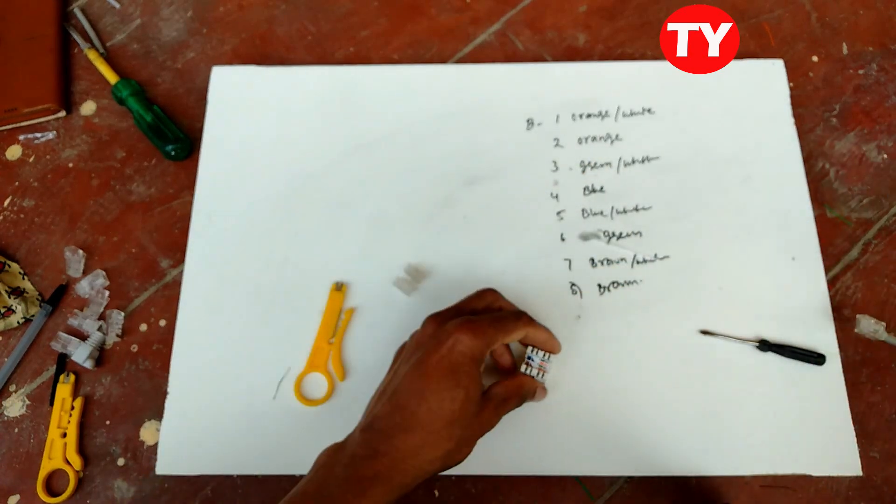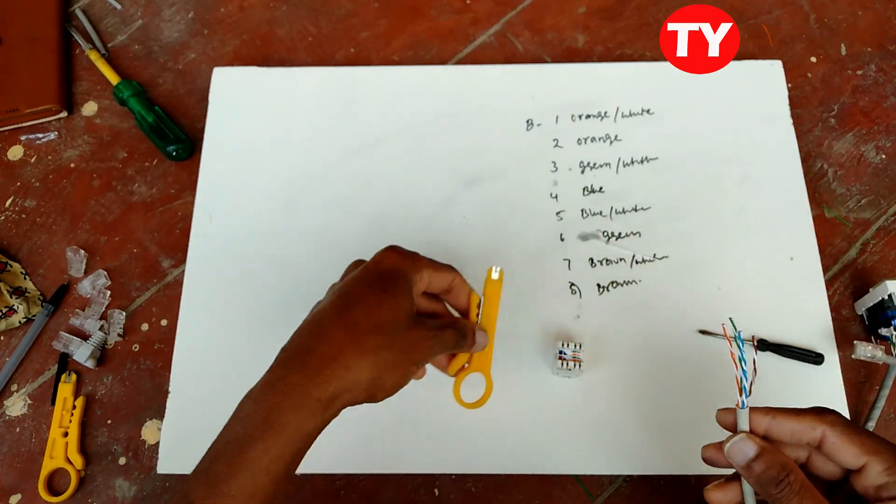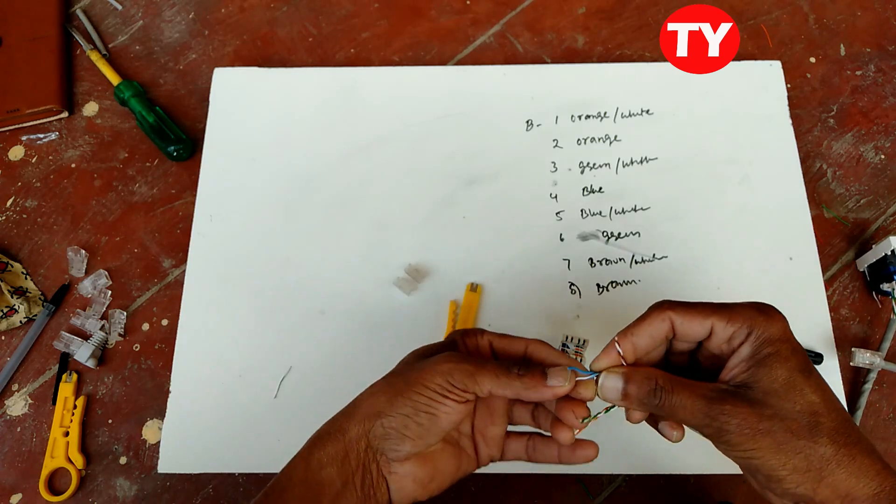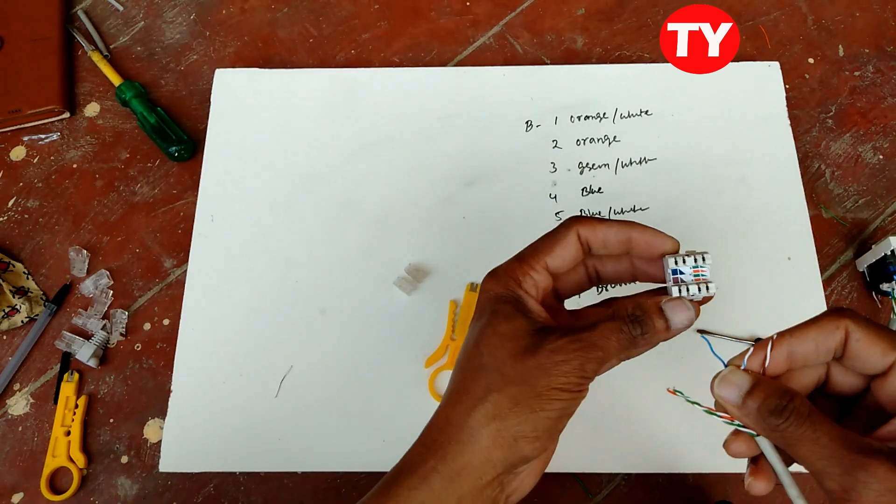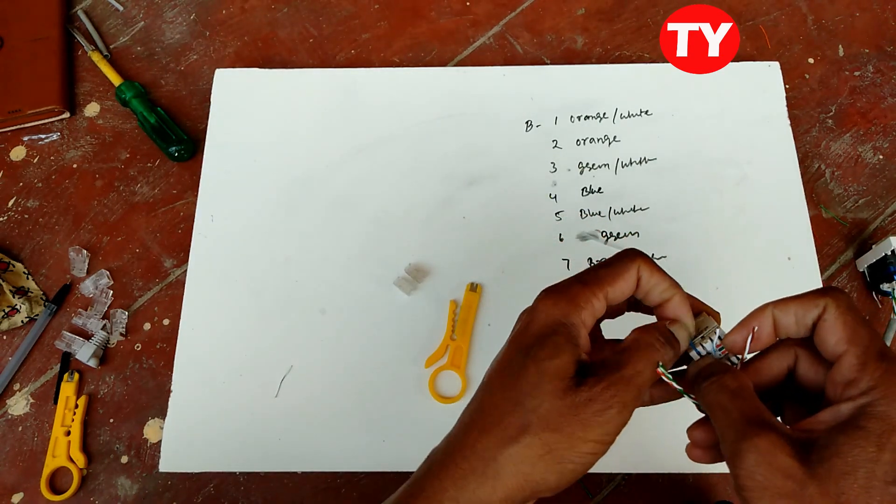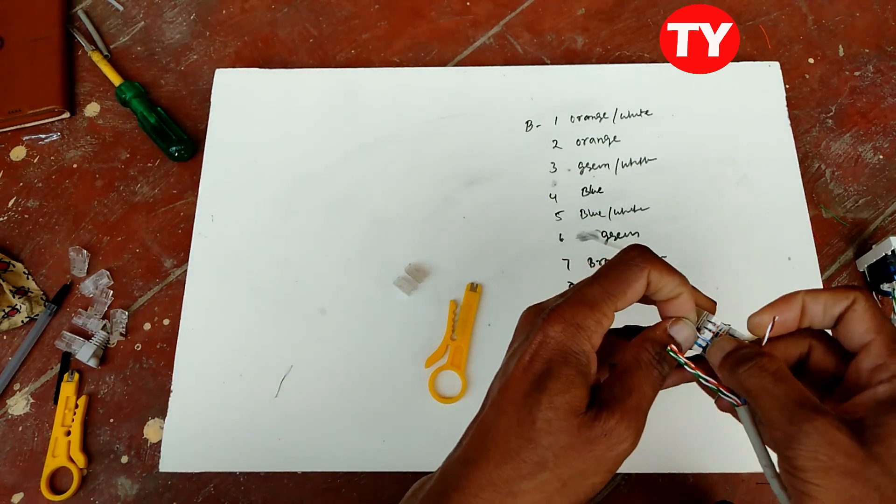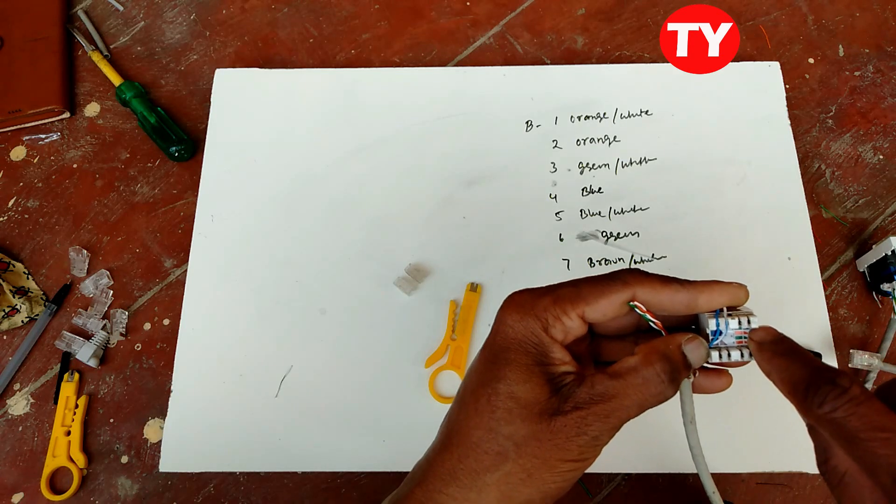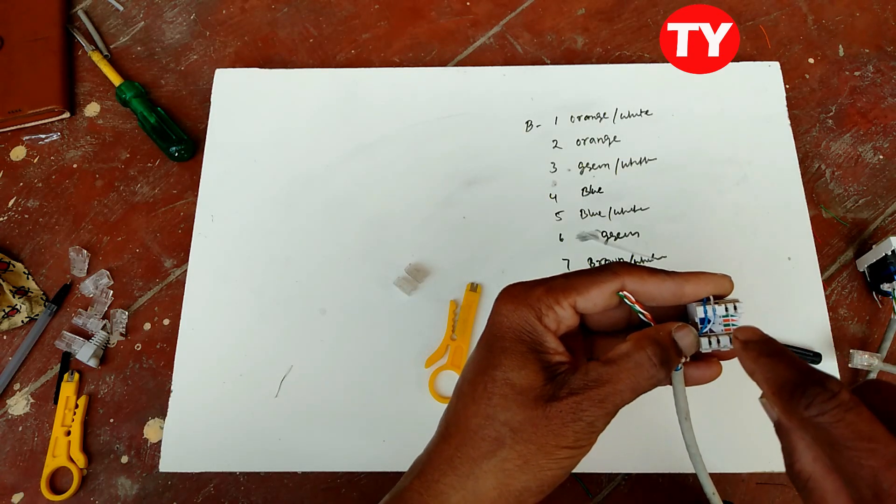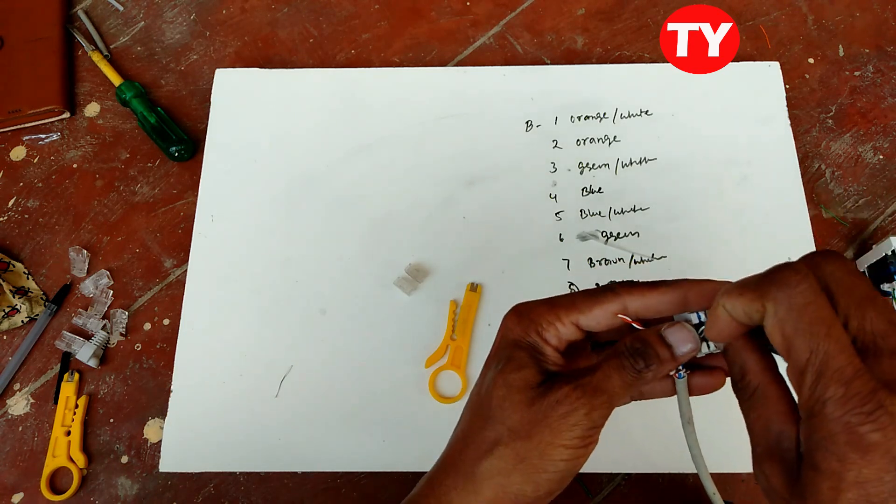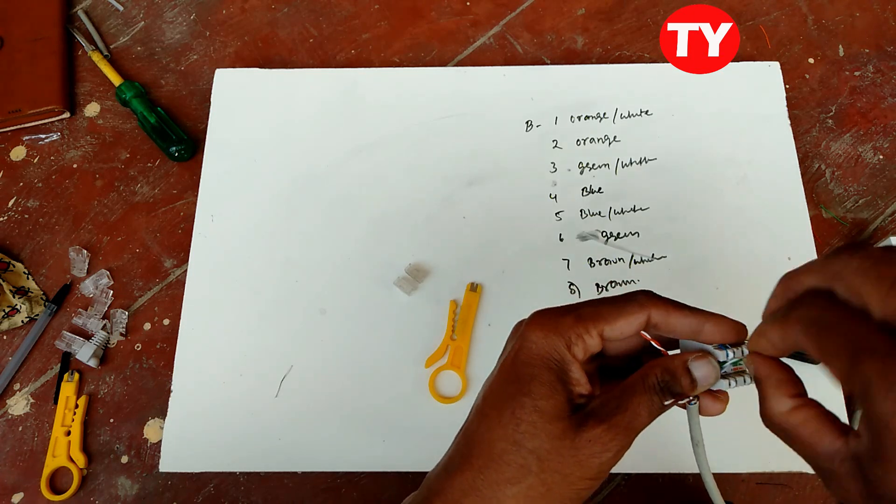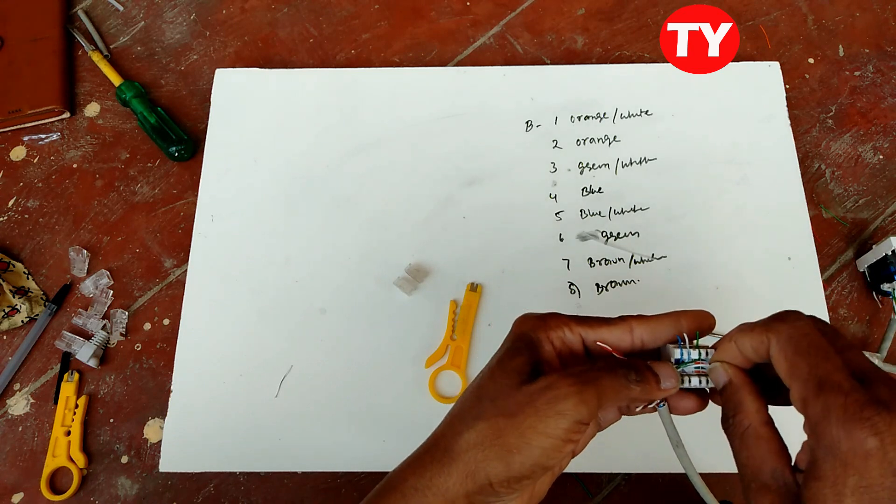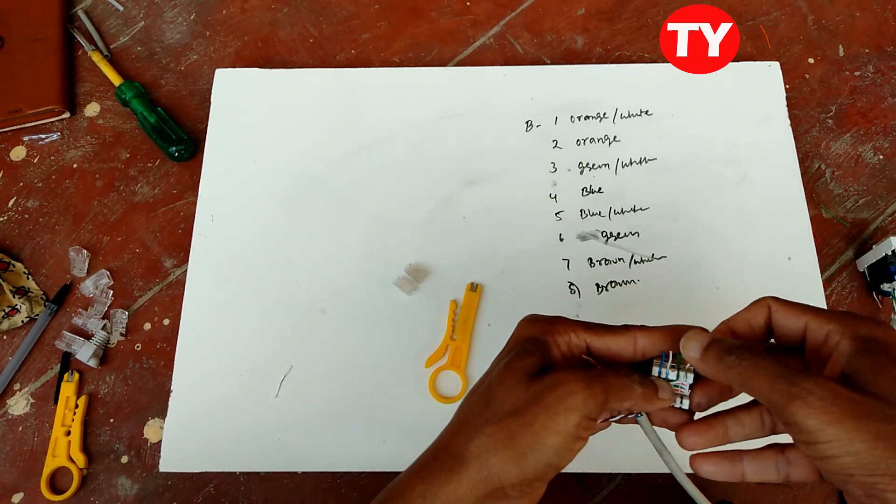Like this we have to fix it. For this we have to use this. Here indication is clearly given: blue first, blue and blue-white. Then if we connect B-type, first green-white and then green. So I am connecting B. If we can connect B or A it will work. I am connecting green and then green-white.